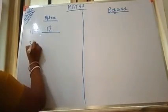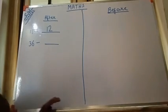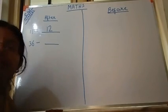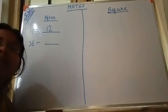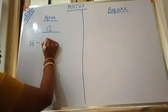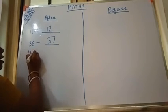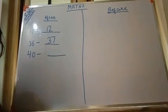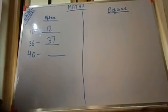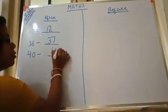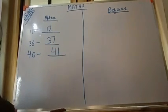Suppose the number is 36. We have to see — after 36, what is the number? The next number of 36 will be 37. So the after number of 36 will be 37. Suppose the number is 40. We have to see the next number. It is 41. So the after number of 40 will be 41.